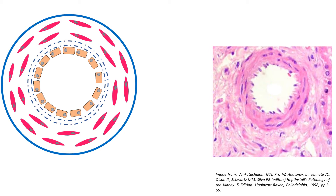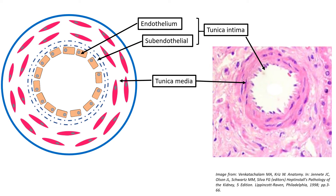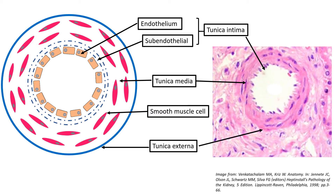Arterioles, as in other arteries, consist of three layers in the vessel wall. The innermost layer is the tunica intima, which consists of a single layer of endothelial cells called the endothelium, beneath which is a subendothelial layer. The middle layer is the tunica media, consisting of one to three layers of concentric rings of smooth muscle cells. The outermost layer is the tunica externa, which consists of connective tissue. This is the lumen of the blood vessel through which blood flows.